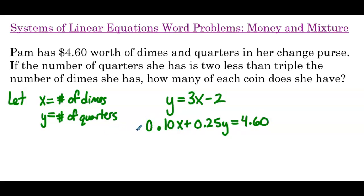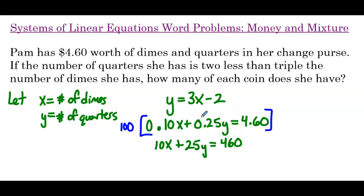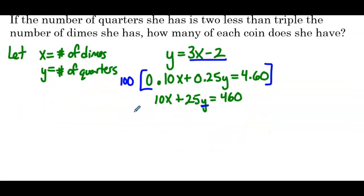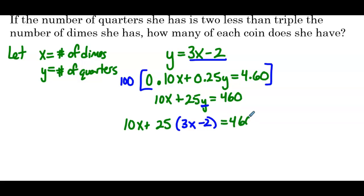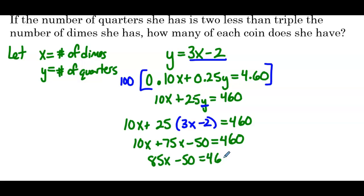Before we substitute, I want to eliminate the decimals. We don't have to, but just to go through that process, we multiply this equation by 100, and that equation becomes 10x plus 25y equals 460. When we multiply each coefficient by 100, the decimal place moves two places to the right. Now we know that y equals 3x minus 2, so we substitute that in: 10x plus 25 times (3x minus 2) equals 460, giving us 10x plus 75x minus 50 equals 460.